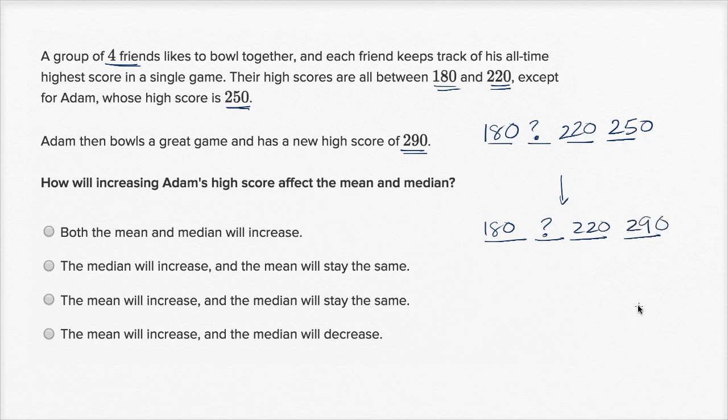So my question is, does this change the median? Well, remember, the median is the middle number. And if we're looking at four numbers here, the median is going to be the average of the middle two numbers. So we're going to take the average of whatever this question mark is and 220. That's going to be the median.